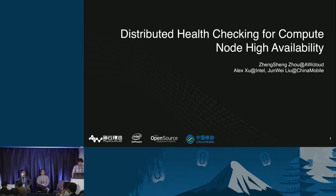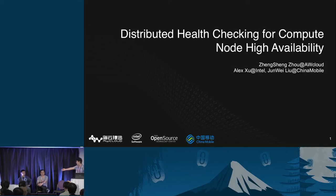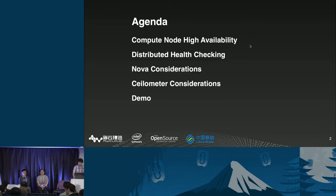Good afternoon ladies and gentlemen. My topic is about compute node high availability in a distributed health checking way. The slides are a united effort of Xu Hejie from Intel, also known as Alex Xu in the Nova community, Liu Jingwei from China Mobile — the largest telecommunication company in China — and me, Zhou Zhengsheng from AW Cloud, an OpenStack startup company in China. You can call me Zhengsheng.